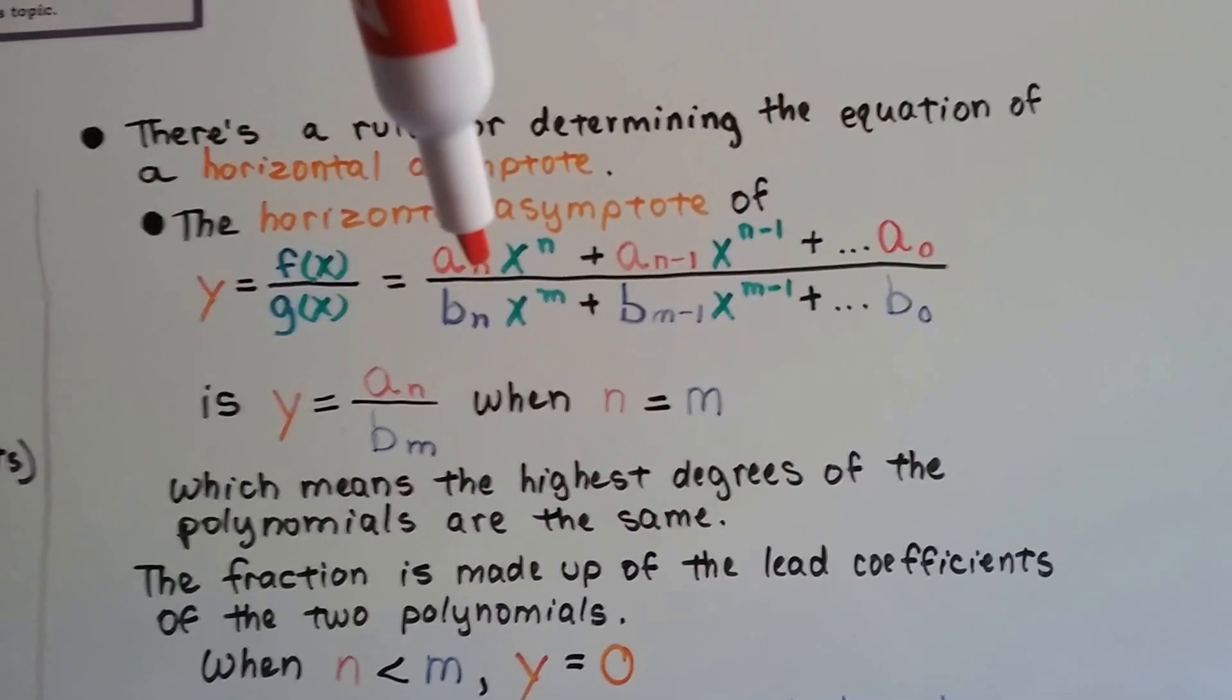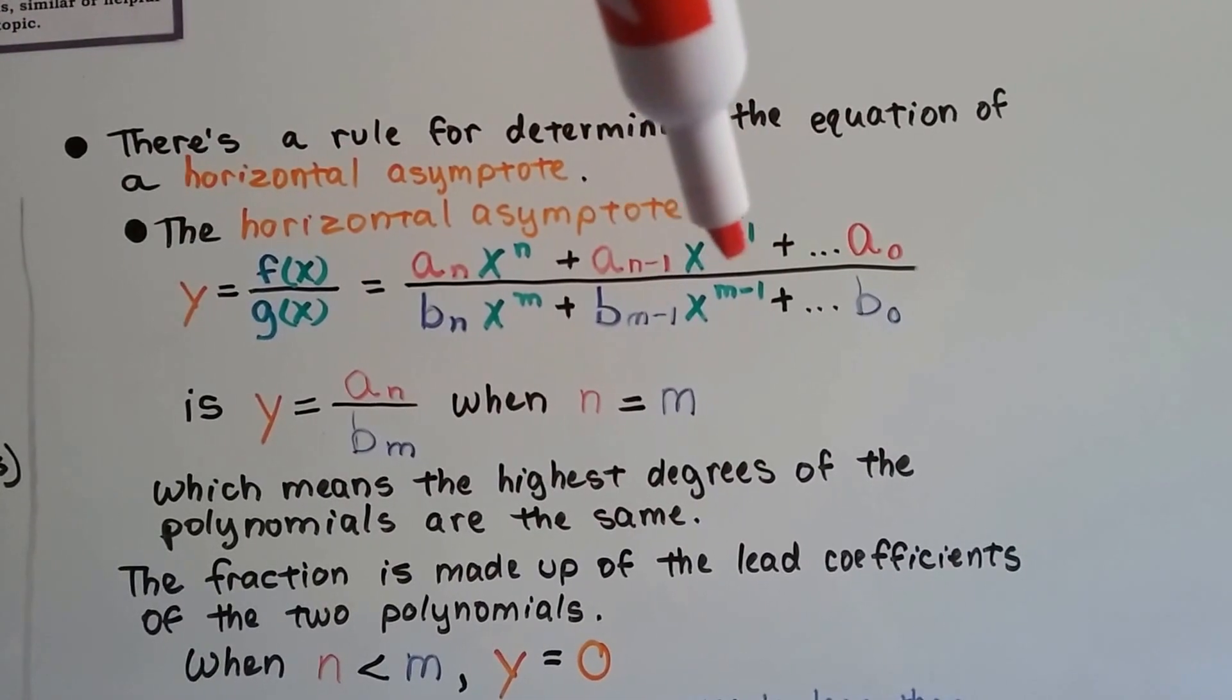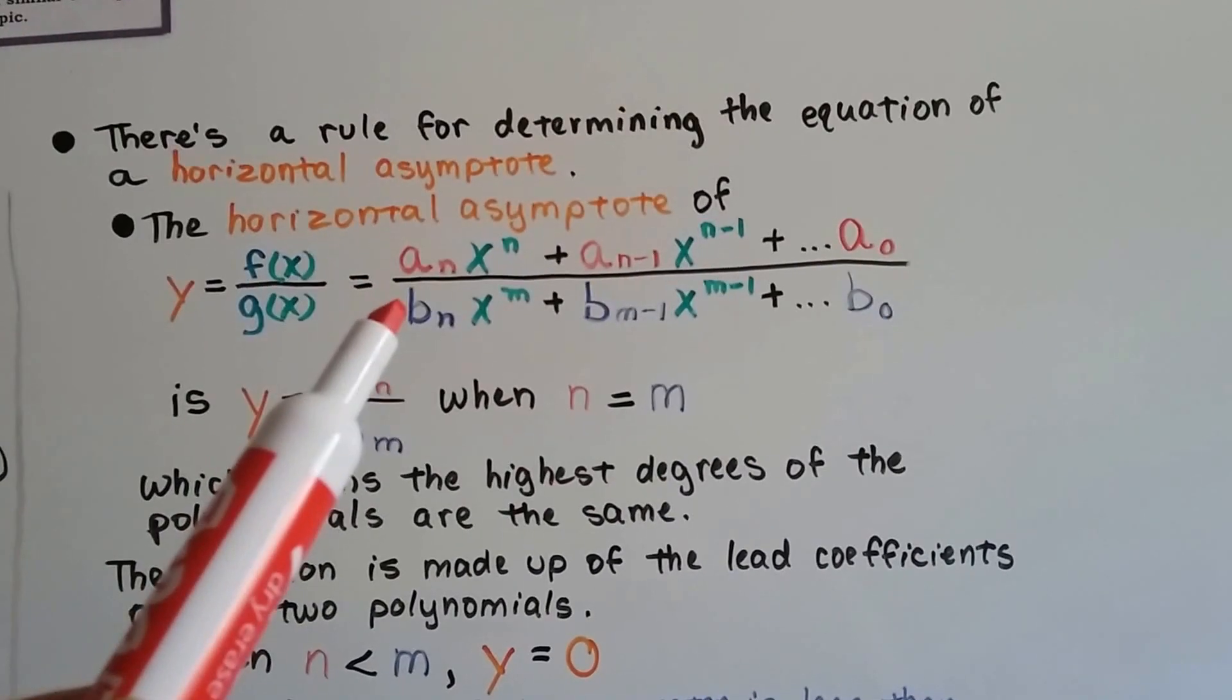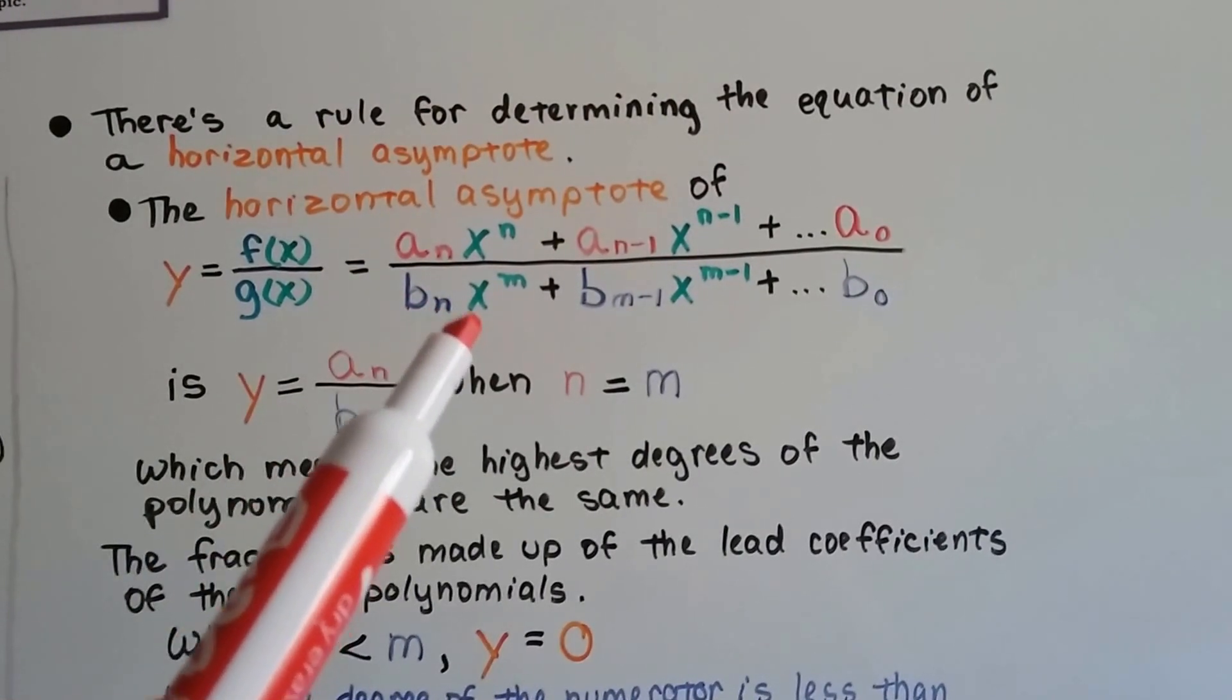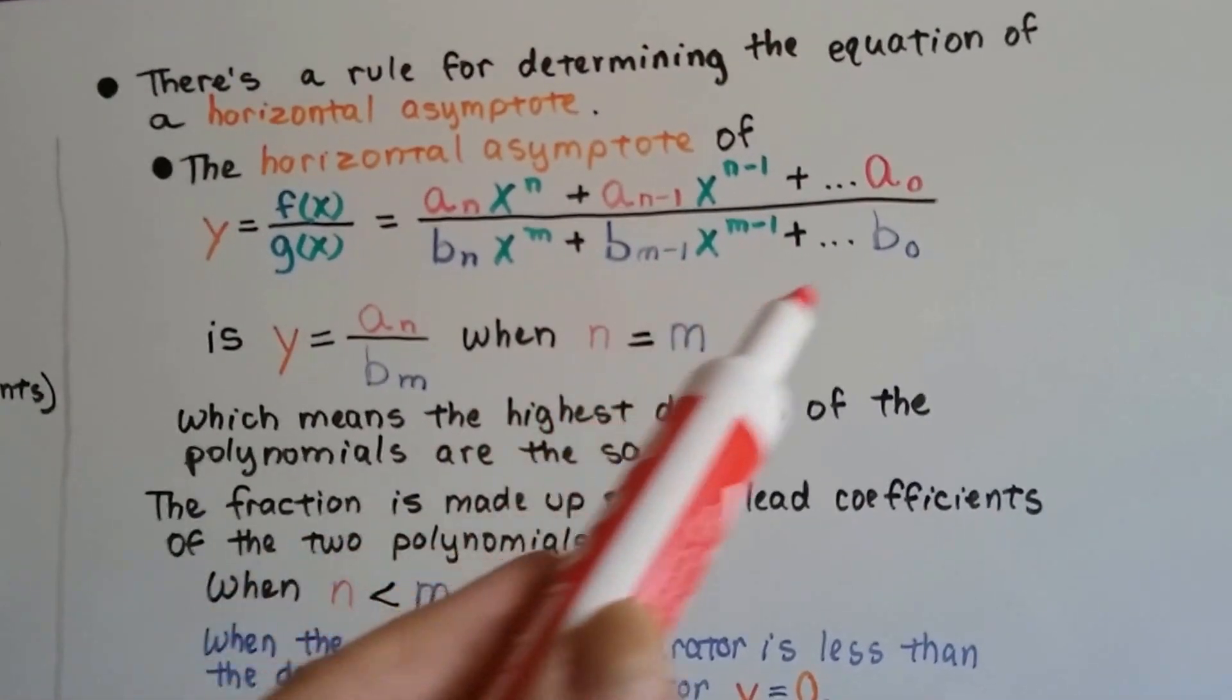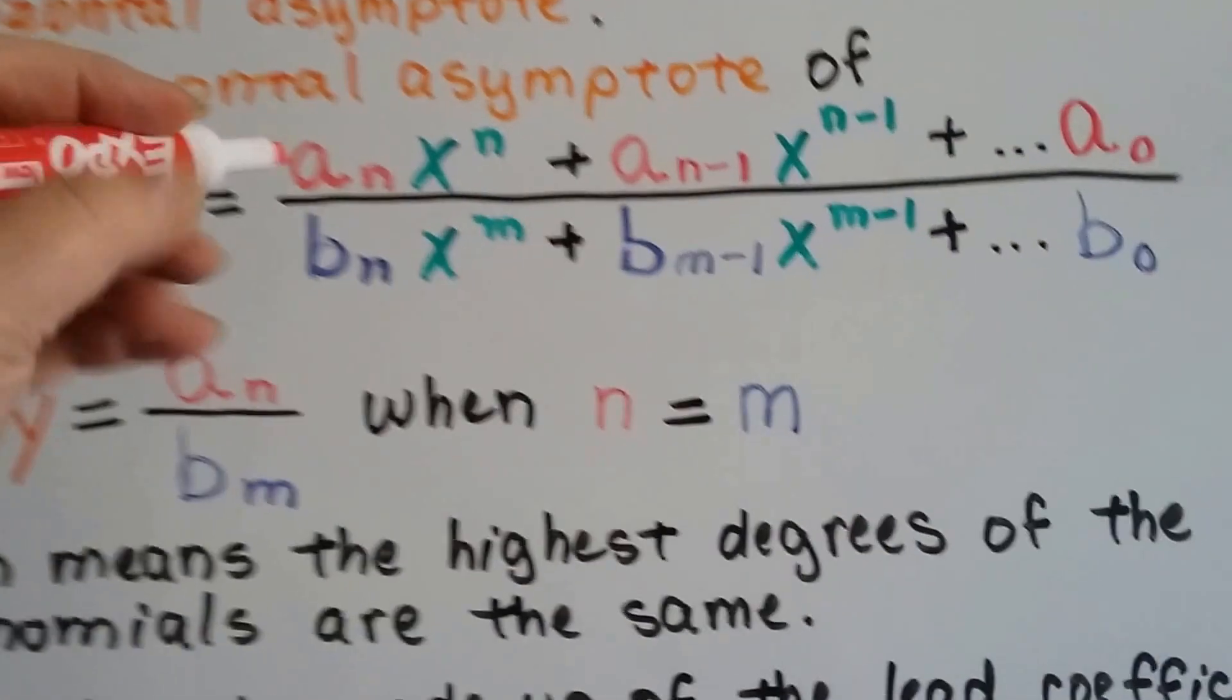We've got a sub n times x to the nth power, and then if you see it goes n minus 1, and then it's going to go on and on until this a is to a sub 0. The denominator is going to do the same thing. It's going to be b sub n, where x is to the m power, and then it's going to be minus 1, etc. to 0. That should actually be an m here, shouldn't it?